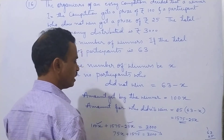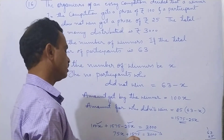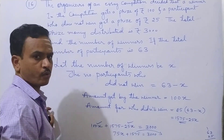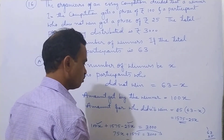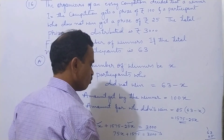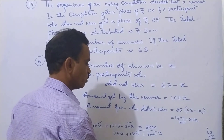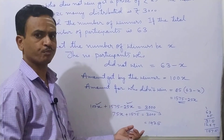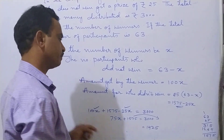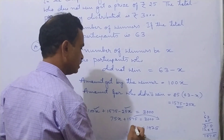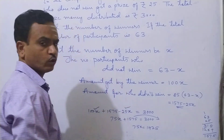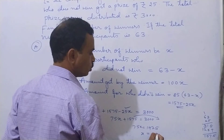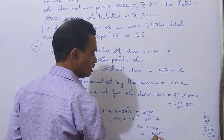Take 1575 to the right-hand side: 3000 minus 1575 equals 1425. So 75x equals 1425.